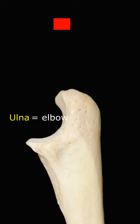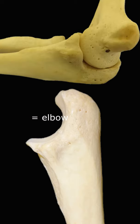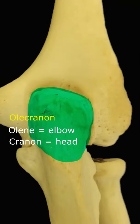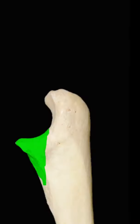The ulna means elbow in Latin. The olecranon is a process at its proximal end. In Greek, olene means elbow and kranon means head, so the olecranon is at the tip of the elbow.